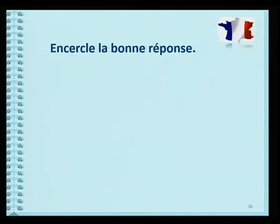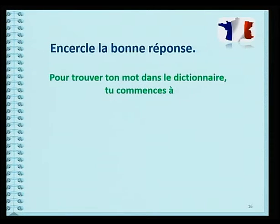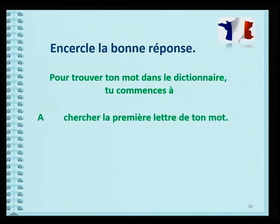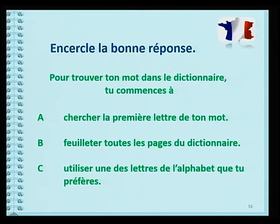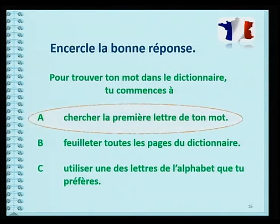Question 2. Pour trouver ton mot dans le dictionnaire, tu commences à: Option A, chercher la première lettre de ton mot. Option B, feuilleter toutes les pages du dictionnaire. Option C, utiliser une des lettres de l'alphabet que tu préfères. Évidemment, c'est la réponse A.